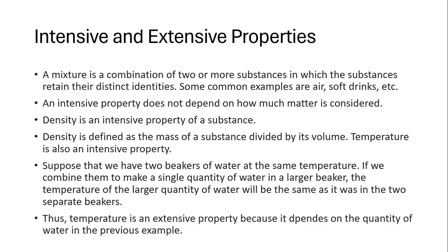Density is defined as the mass of the substance divided by its volume. Temperature is also an intensive property. Suppose we have two beakers of water at the same temperature — if we combine them into a single large beaker, the temperature of the large quantity of water will be the same as it was in the two separate beakers. Note: the last bullet on the slide is incorrect, as temperature has already been identified as an intensive property, so we will disregard it.